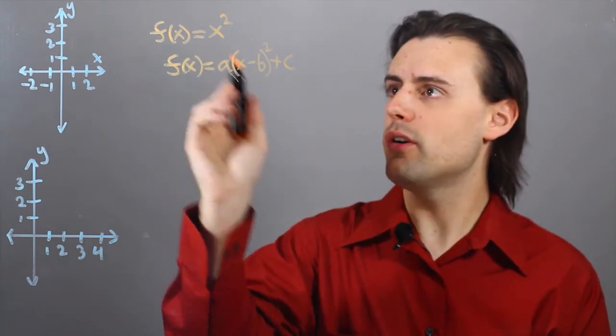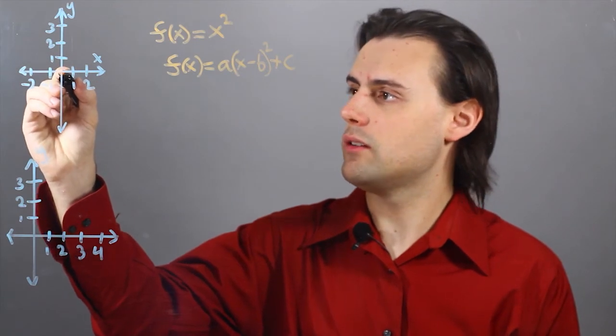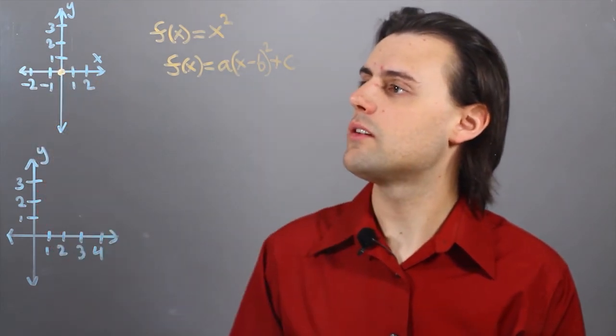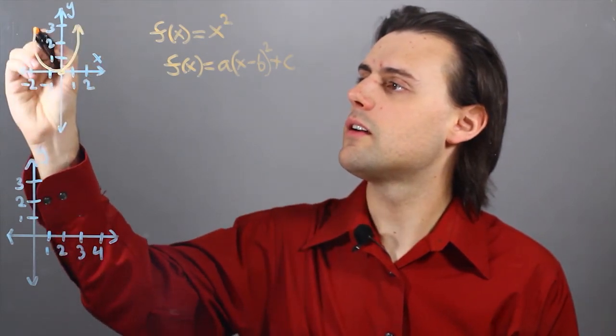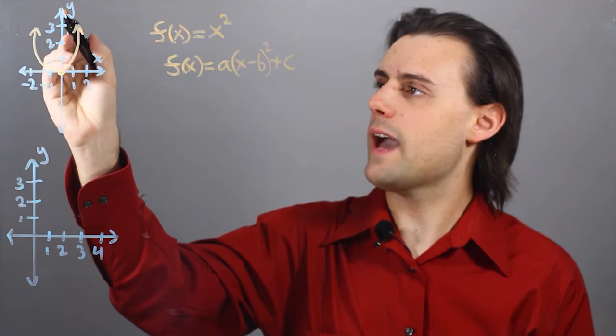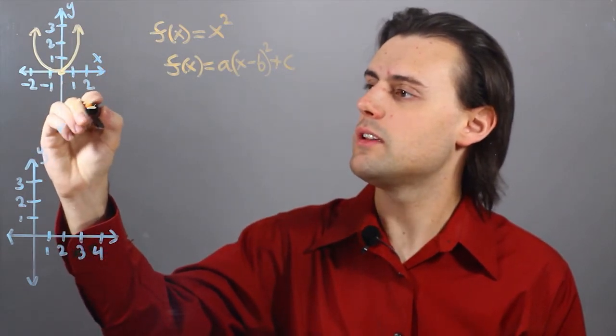So if I want to plot x squared, my origin and also the vertex will be here and it will look something like this where the axis of symmetry is along x equals zero.